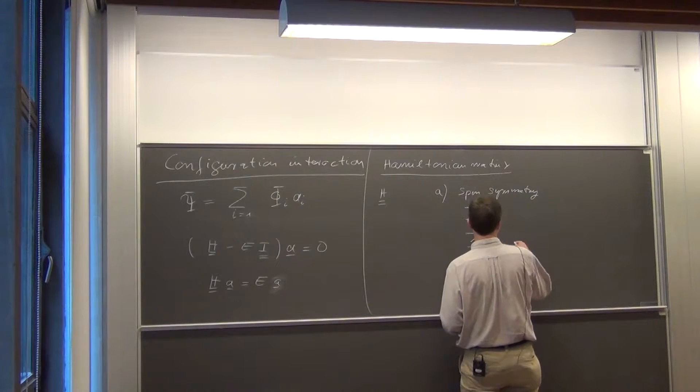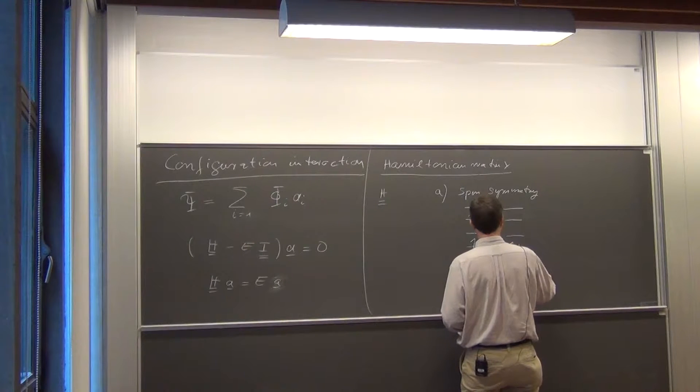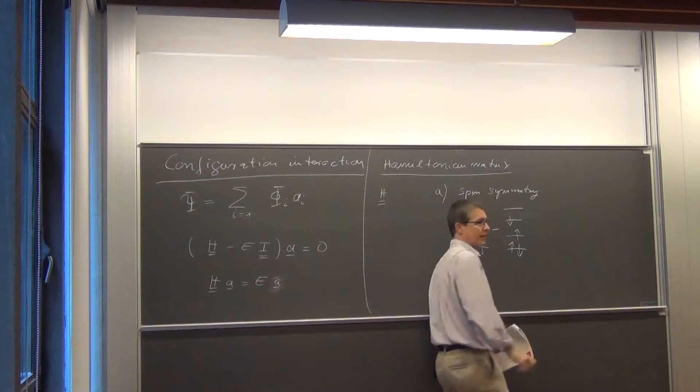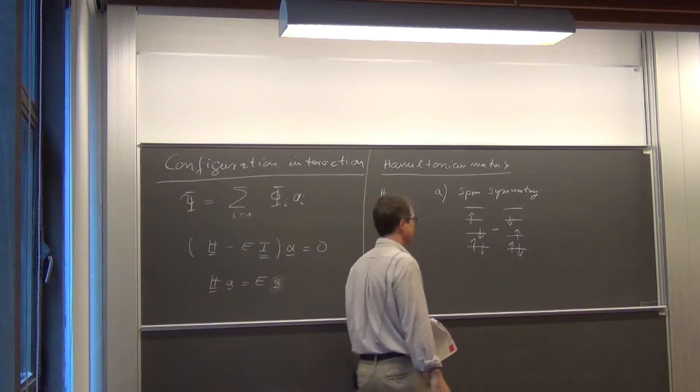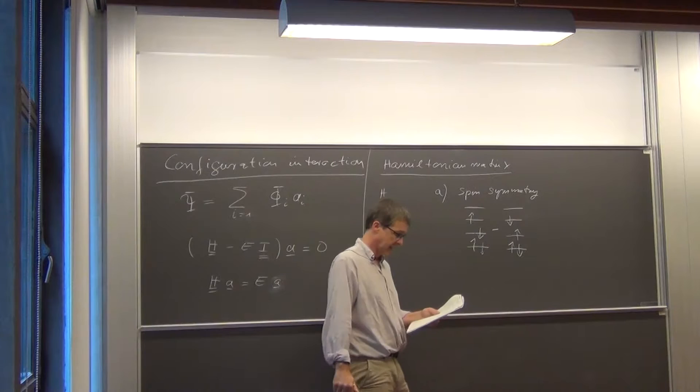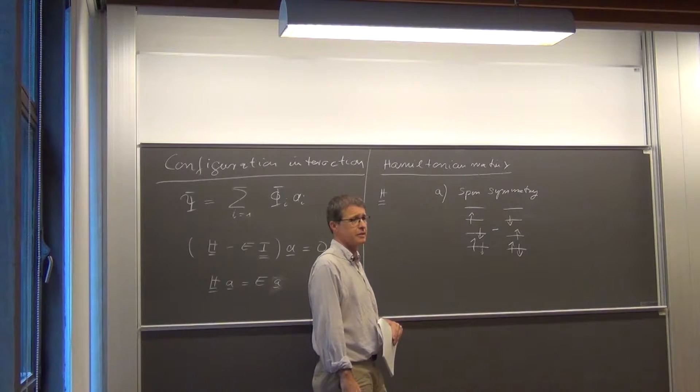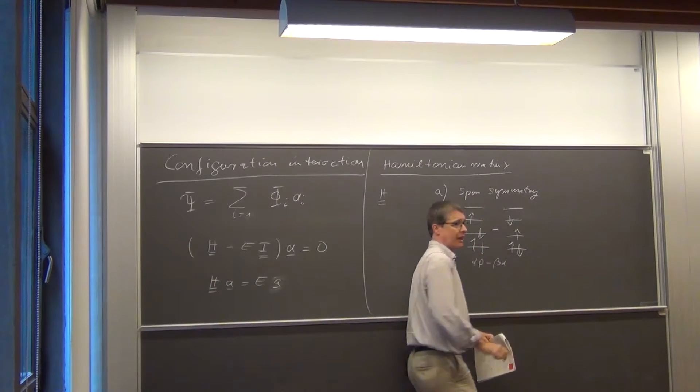Then we found out on Tuesday that this is not an eigenfunction to S squared. But if you make a linear combination of this one, this configuration, with that one, and combine them with a minus sign, then we got something which is, again, a singlet, which has an S value equals to zero. Because this is alpha-beta minus beta-alpha.